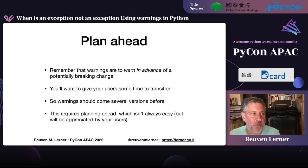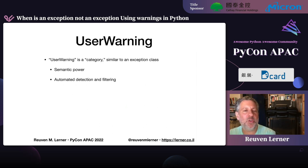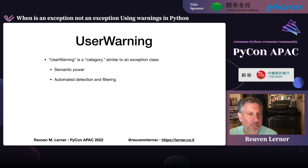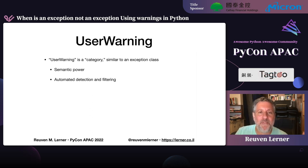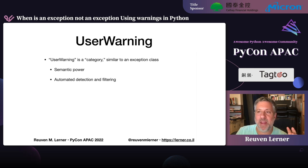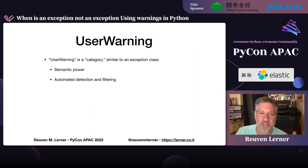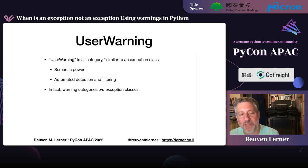UserWarning is a category, sort of like an exception class. I care about this for two reasons: it gives semantic power — I can know what type of warning there is just by seeing the category — and I can filter and detect different kinds of warnings, much as I can use try/except on different kinds of exceptions. Just as with exceptions, warning categories are exception classes. UserWarning inherits from Warning, and Warning inherits from Exception. So warnings are exceptions — but specific kinds of exceptions meant to be used for warnings.